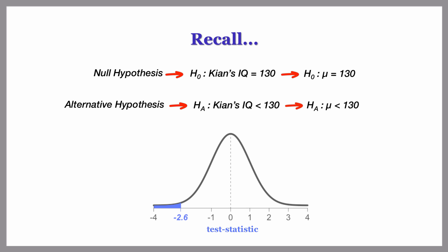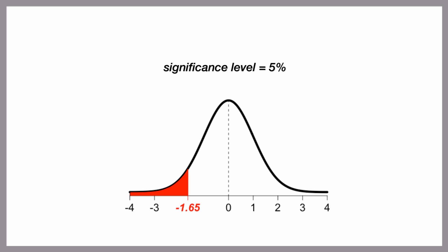Recall we have the following hypotheses and the test statistic is negative 2.6 with a corresponding p-value of 0.47%. Using a significance level of 5%, we found the critical value to be negative 1.65.